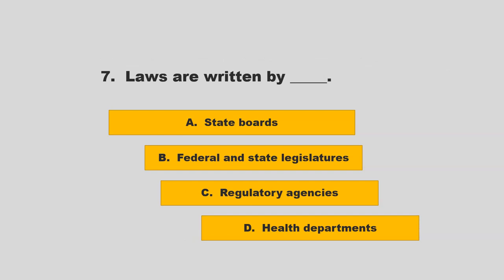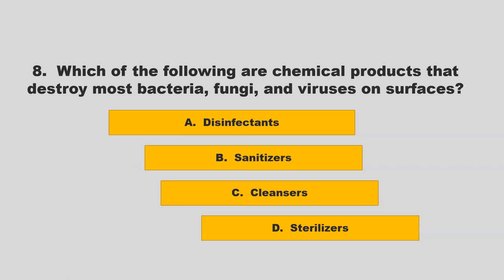Laws are written by blank. Options: State Boards, Federal and State Legislatures, Regulatory Agencies, or Health Departments. The correct answer is B: Federal and State Legislatures.